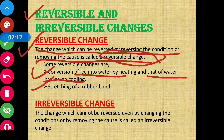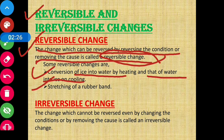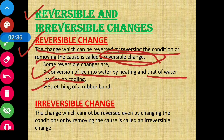Another example is stretching of a rubber band. When we stretch the rubber band, its shape changes — a change takes place. Now when we stop stretching it, it comes back to its original shape. So that change can also be reversed.